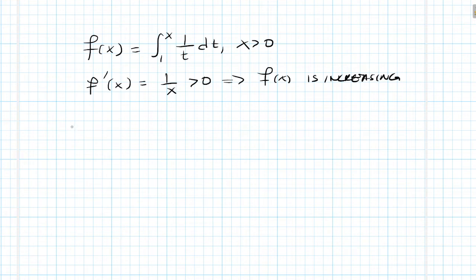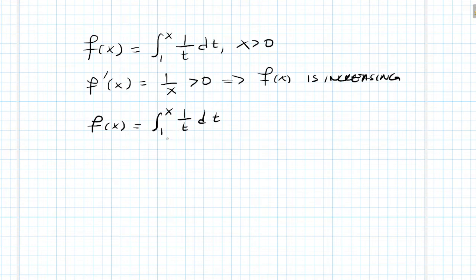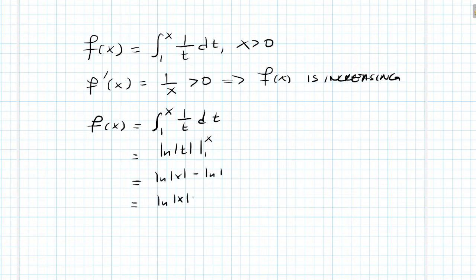Now we want to show that f inverse of 0 is equal to 1. Let's first find f of x. We know that f of x is the integral from 1 to x of 1 over t dt. Taking the antiderivative of 1 over t, we plug in x and plug in 1 and subtract. We know that ln of 1 is 0, so this is just equal to ln of x. So that is f of x.